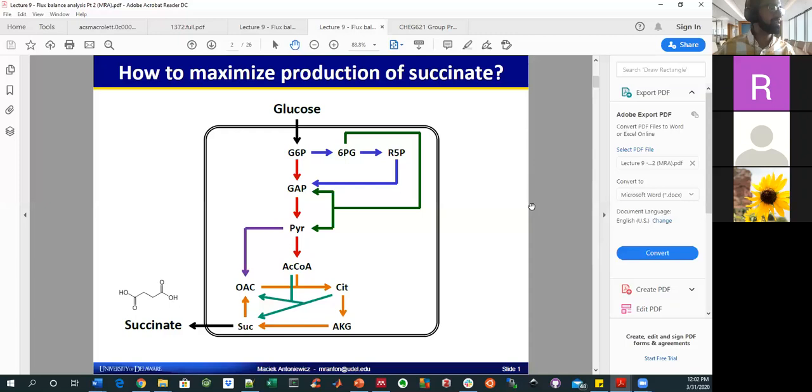Or you could use a metabolic flux model from the outset, which is still different than our theoretical yield calculations, to say how do I maximize production of something like succinate? Because if you have this stoichiometric model, you can effectively run an optimization framework on it given an objective function. So in this case, our objective would be to boost flux to succinate, maybe specifically to make this black arrow here as high as possible.